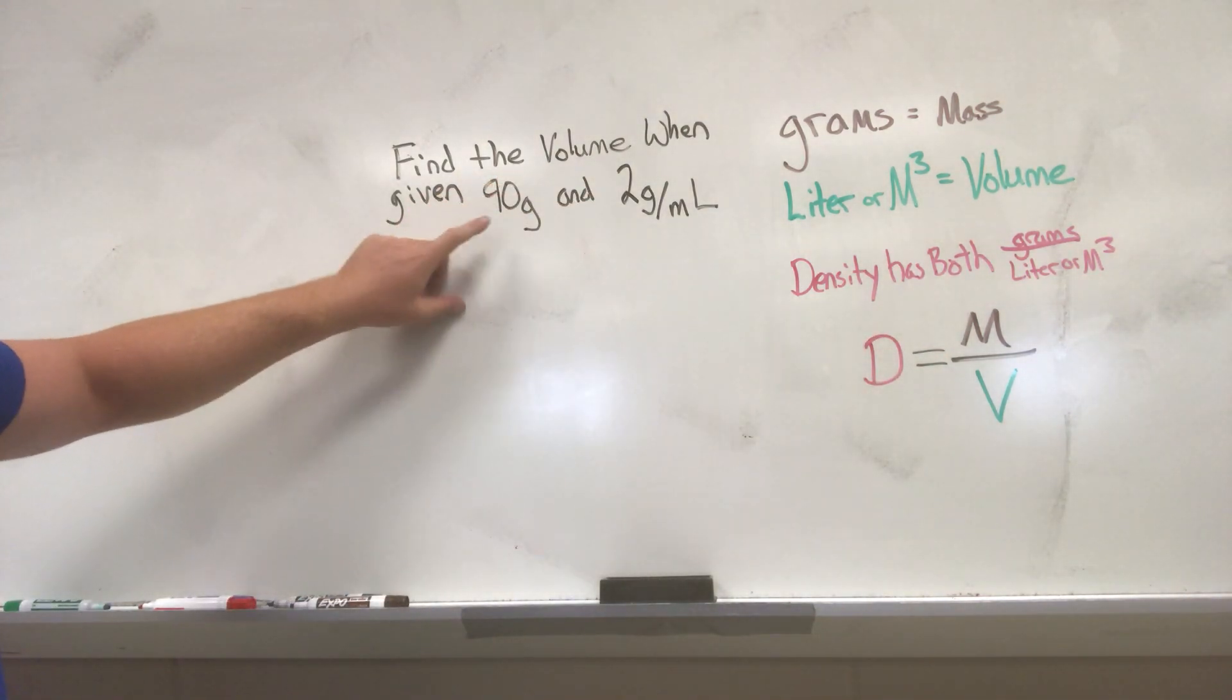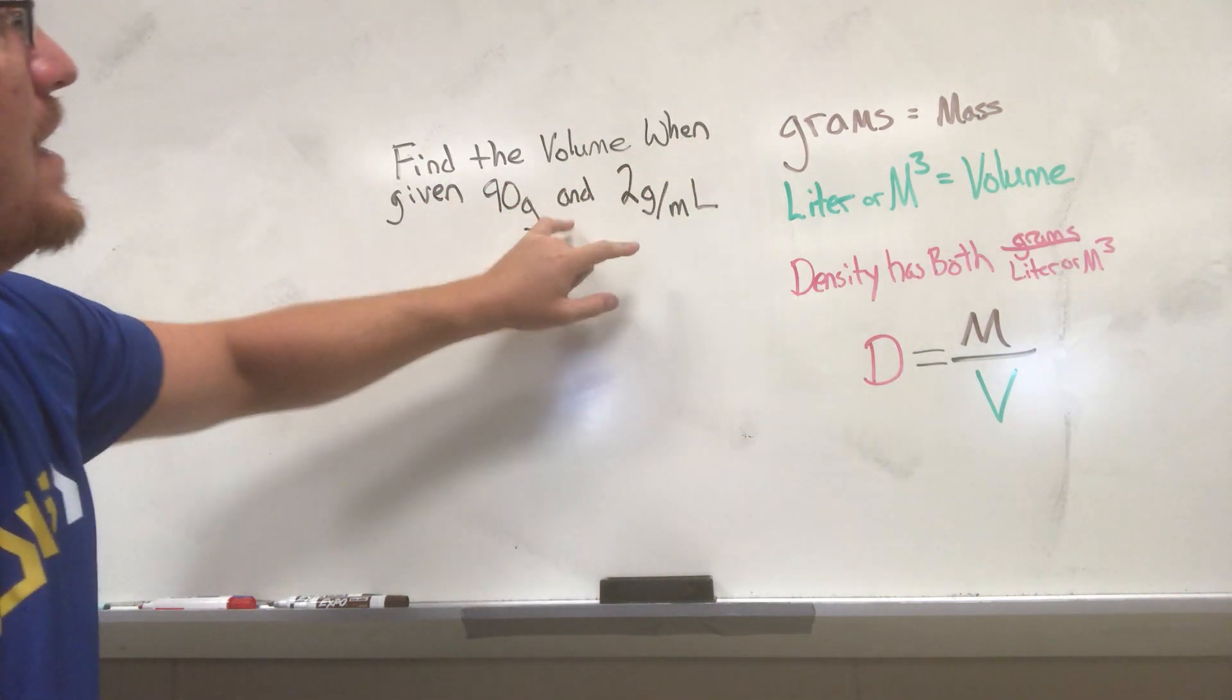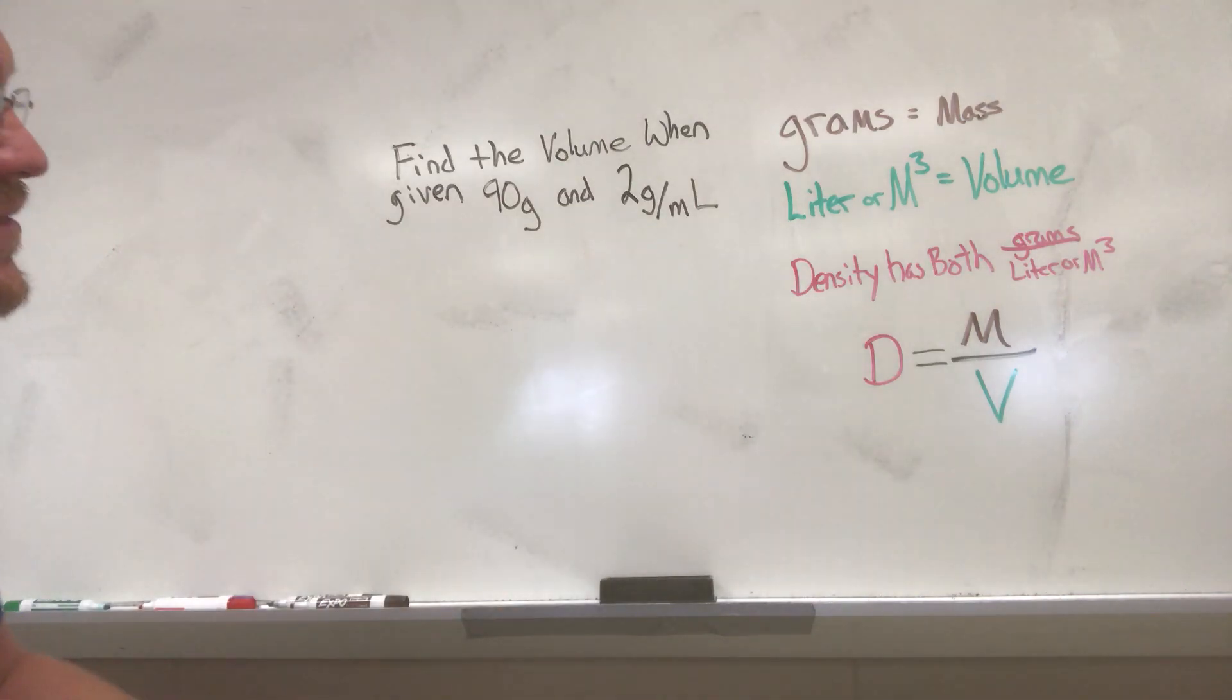So we're told to find the volume when given 90 grams, so grams tells us this is our mass, and 2 grams per milliliter. We have both a mass and a volume unit here, so we know that is our density unit.